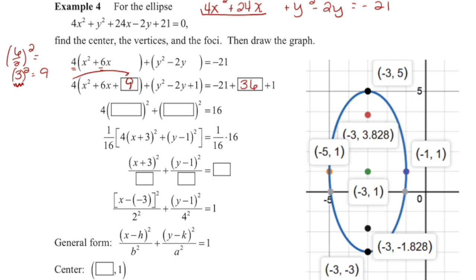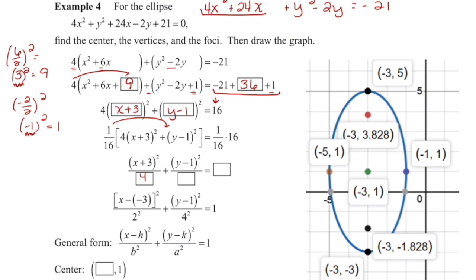When looking at my y value, I'm going to take negative 2 divided by 2 and square it, giving me negative 1 squared — again, this is the value I'm going to use when I factor — which equals positive 1. Notice I didn't multiply anything on the outside, so just adding 1 to the right is fine. Factoring then, I'll have 4 times (x plus 3) squared plus (y minus 1) squared equals 16 when I add all of these values together. I need this to be a 1, so I'm going to multiply everything by 1/16. When I multiply by 1/16, I'll have 4/16 — which reduces to 1/4 — plus 1/16, and all this will equal 1.